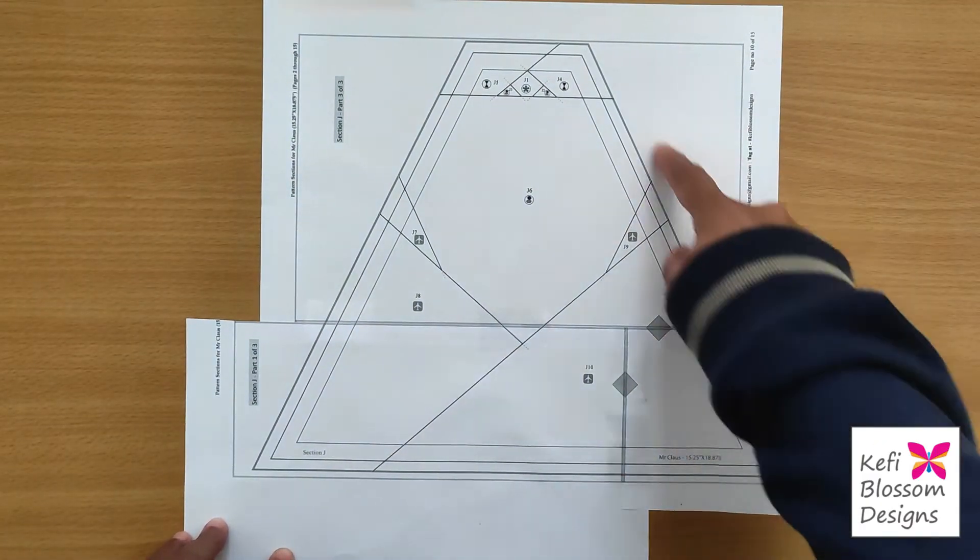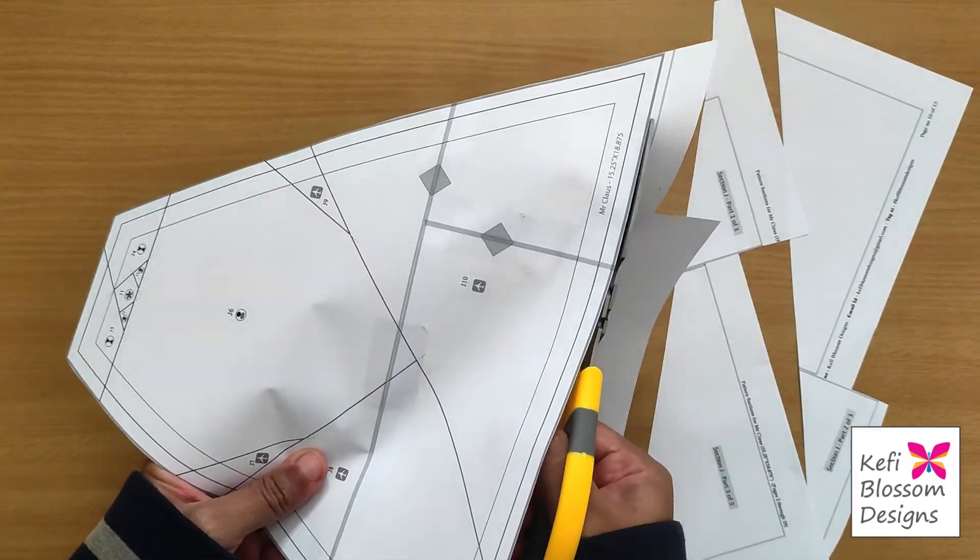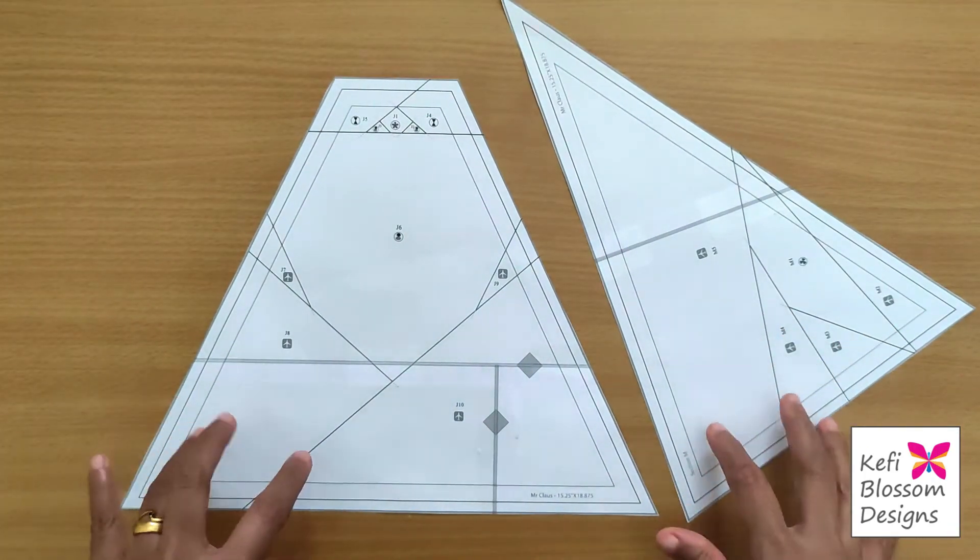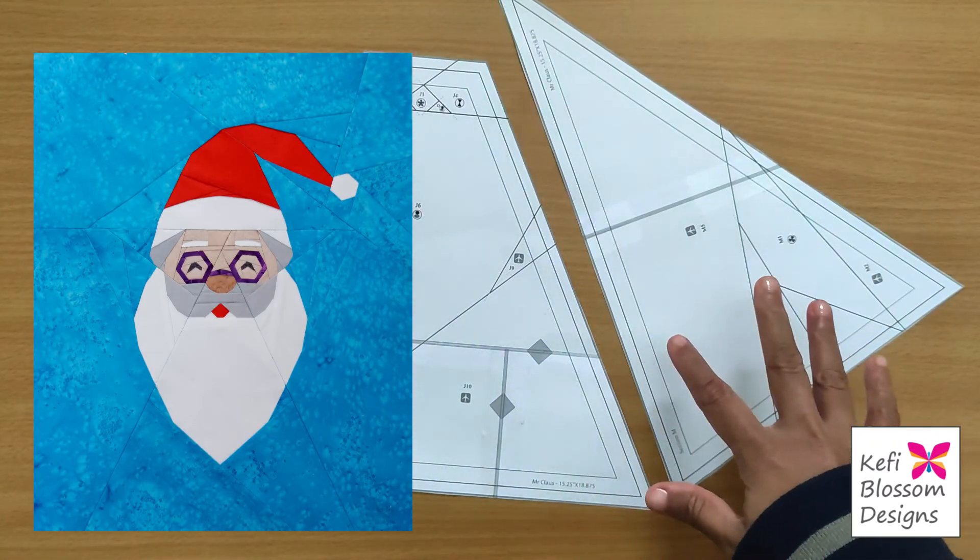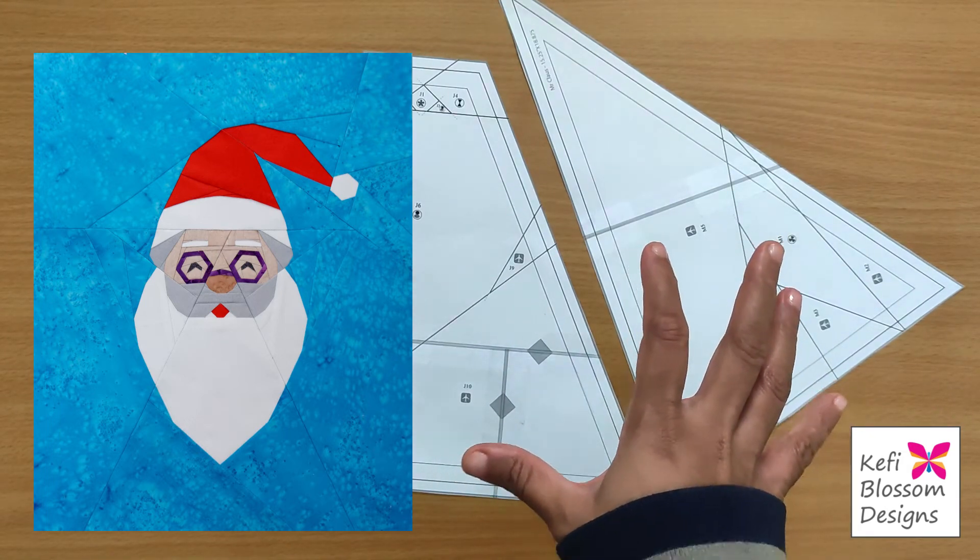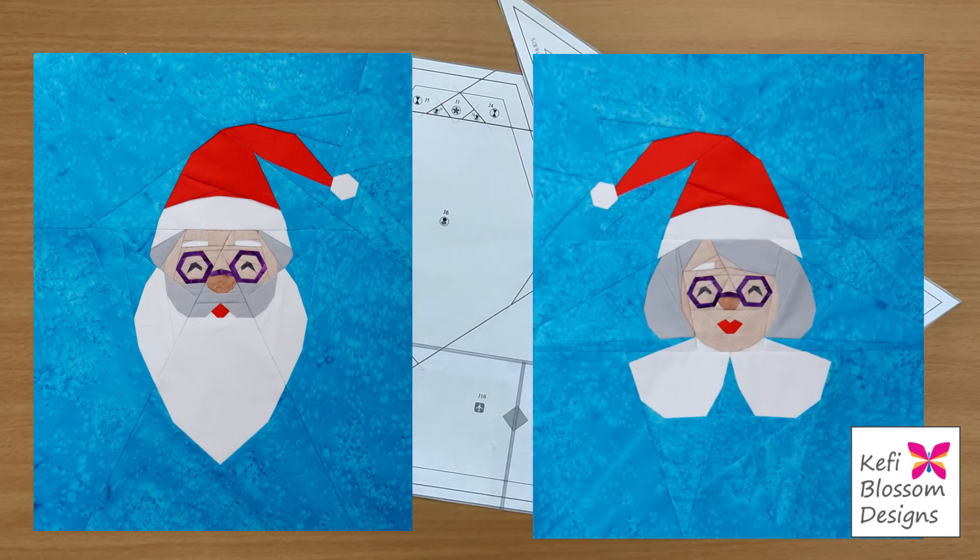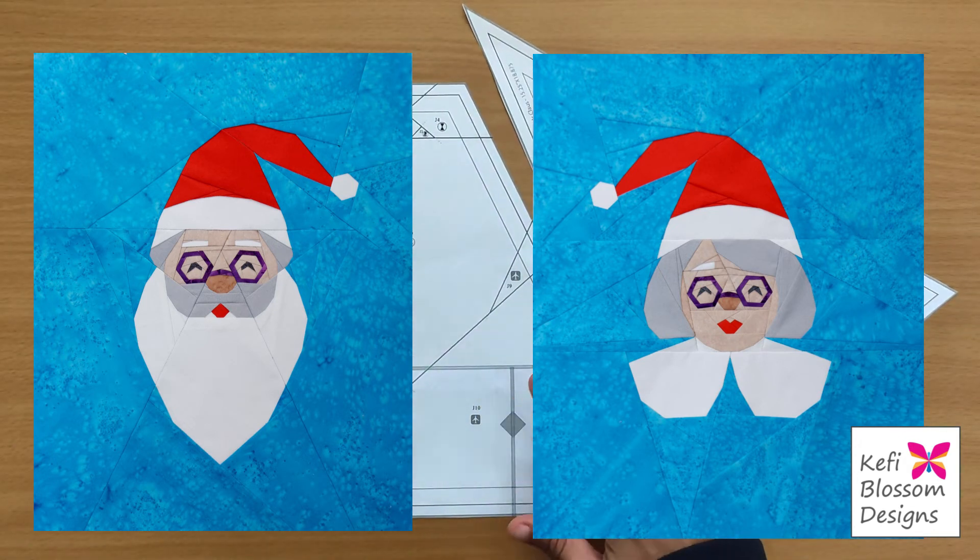That's it. Now I can cut out this section using the outer grey line. Now our sections are joined and we can start stitching our fabric pieces over it. These sections belong to one of my patterns called Portrait of Mr. Klaus, which is available at my Etsy shop. Along with other patterns, there is also a pattern of Mrs. Klaus. In case if you're interested, you can check them out. I will link the shop in the description below. Hope this video was useful and until next time, bye-bye.